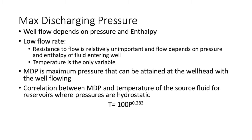Well flow depends on pressure and enthalpy. At a low flow rate with low pressure, resistance to flow in the reservoir is unimportant, and flow depends only on the pressure and enthalpy of fluid entering the well. If the reservoir is normally pressured, temperature is the only variable. The maximum discharge pressure is the maximum pressure attainable at the wellhead with the well flowing. If the well is progressively throttled from a large flow, wellhead pressure increases until reaching a maximum at non-zero flow rate, after which further throttling causes both pressure and mass flow to decrease.